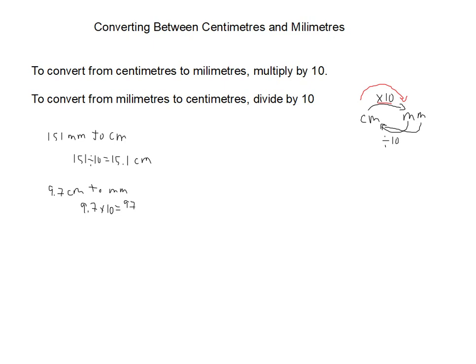And again, don't forget the units here, the units are really important. This is 97 millimeters. So that's how you can convert from millimeters to centimeters, or centimeters to millimeters.